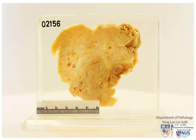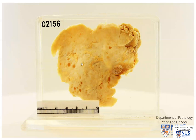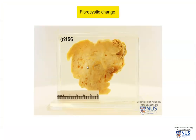In addition, we can also see these pale brownish rounded spaces, and these are cystic spaces. In the fresher specimen, before these spaces were cut open, they may have appeared somewhat bluish because of the turbid fluid that they contained. So here we have an example of fibrocystic change in the breast, and this is a benign condition.